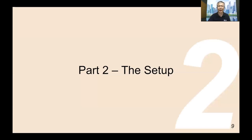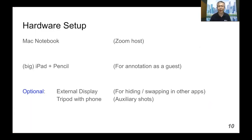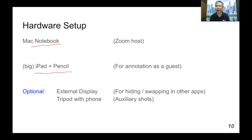Now let's look at the setup. We'll start with the hardware, which is the simple part. We're going to have a Mac notebook, which will serve as our Zoom host for our meeting — we'll set that up and start the meeting — and then join a guest annotator through an annotation device like an iPad. I strongly recommend you use a larger form iPad because handwriting when doing annotation, writing formulas, or other types of prose is usually not that great on a smaller device. Having a larger device helps a lot because the resolution of your pencil will be much better.